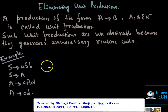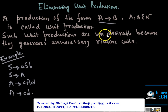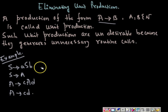In this tutorial, I am going to show you how to eliminate unit productions. A production of the form A arrow B, where A and B are both non-terminals, is called a unit production. Such productions are undesirable because they generate unnecessary routine calls within the compiler. I'm going to show you how to eliminate unit productions using some suitable examples.